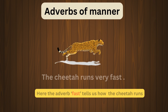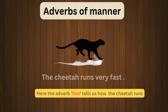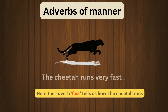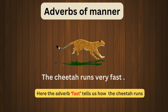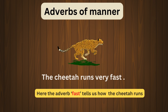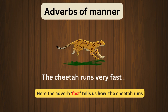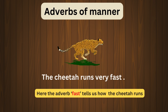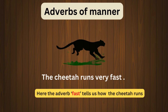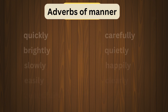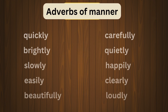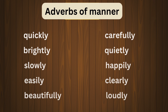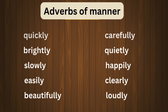Next example: The cheetah runs very fast. Here the adverb 'fast' tells us how the cheetah runs. These are some examples of adverbs of manner that show how the action is happening.